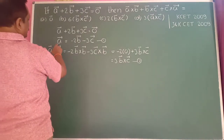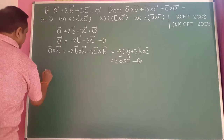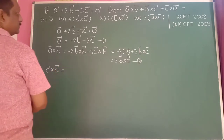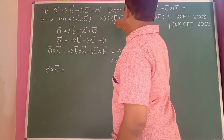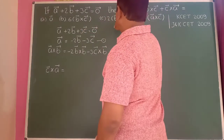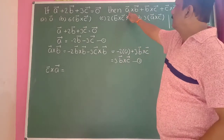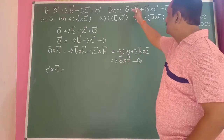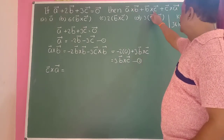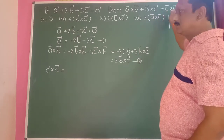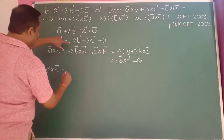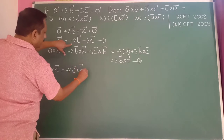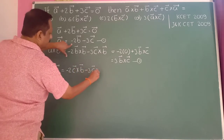Now taking the cross product of c-bar on both sides. On the left hand side, c-bar cross a-bar equals minus 2 into c-bar cross b-bar minus 3 into c-bar cross c-bar. Since c-bar cross c-bar equals zero, we get c-bar cross a-bar equals minus 2 into c-bar cross b-bar. Interchanging gives plus 2 into b-bar cross c-bar. Therefore c-bar cross a-bar equals 2 into b-bar cross c-bar.